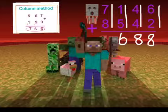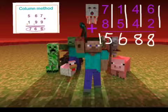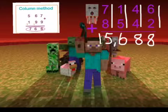So I know my double 7, 7 plus 7 is 14, and one more for the 8 is 15. So there we have our number, our answer, 15,688, using a column method.